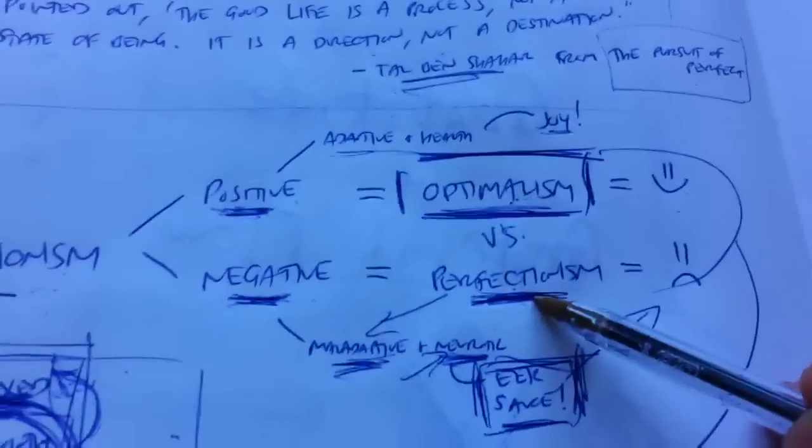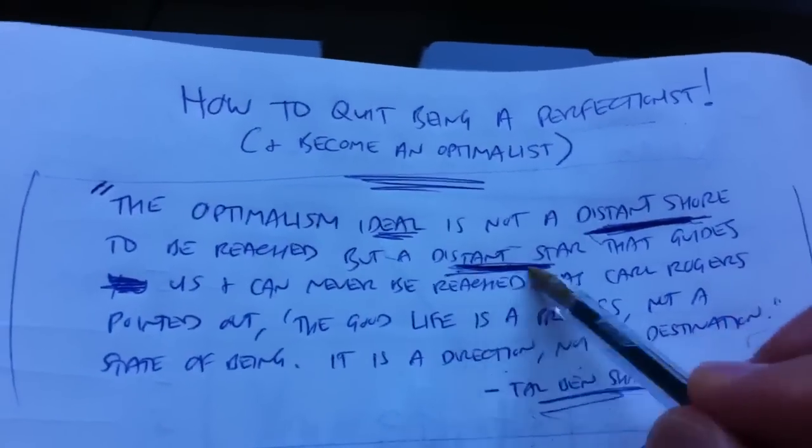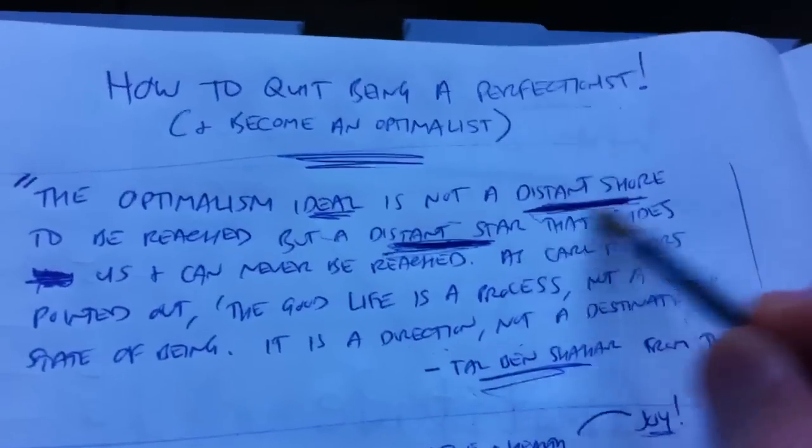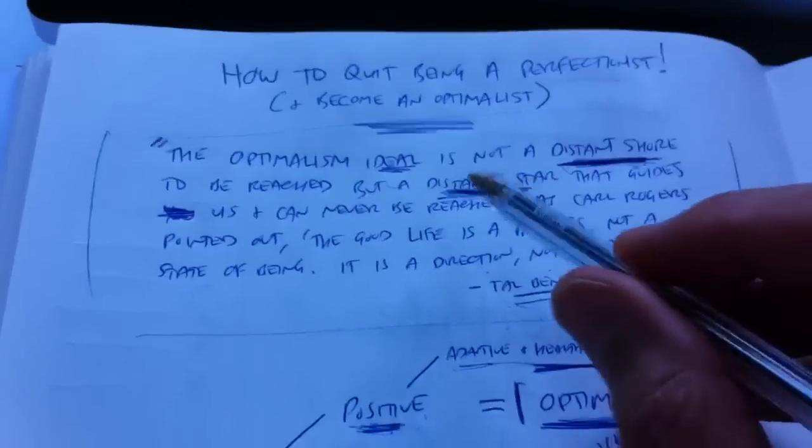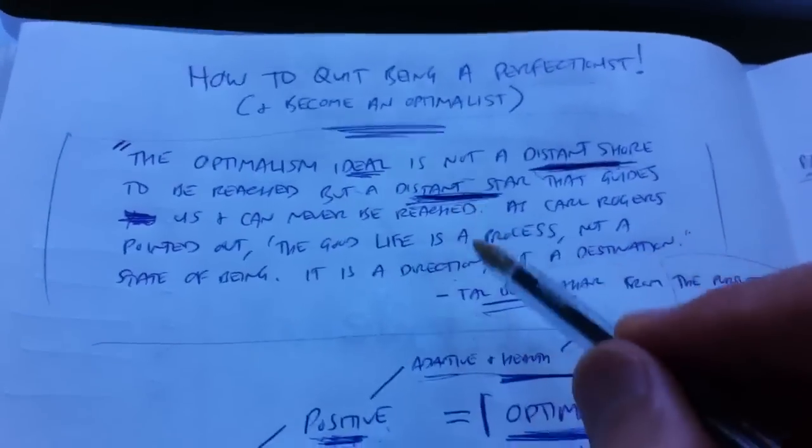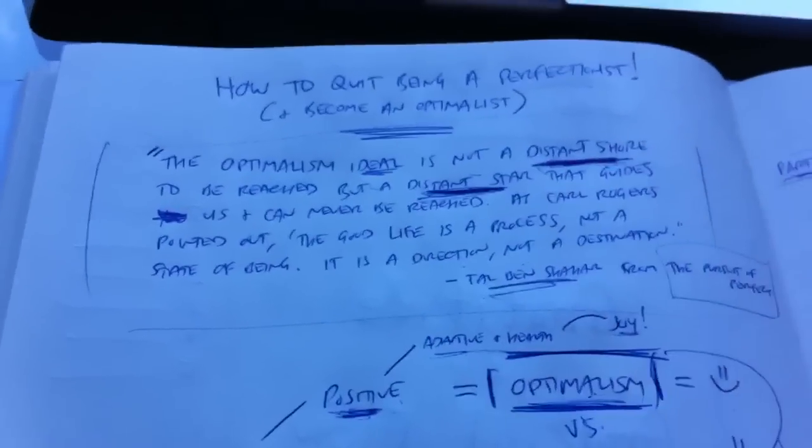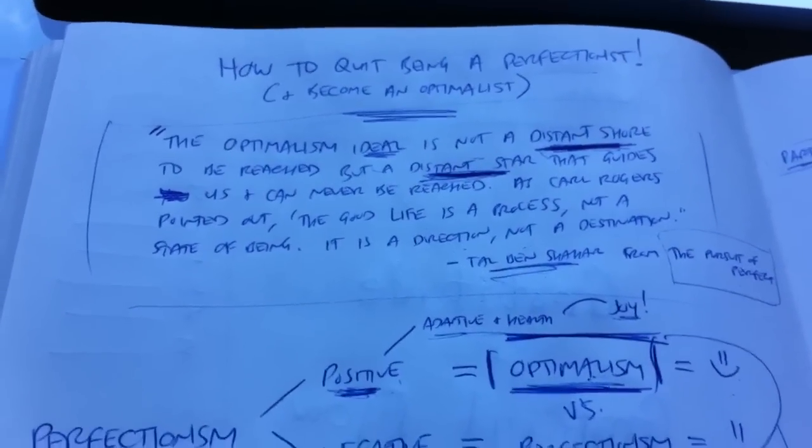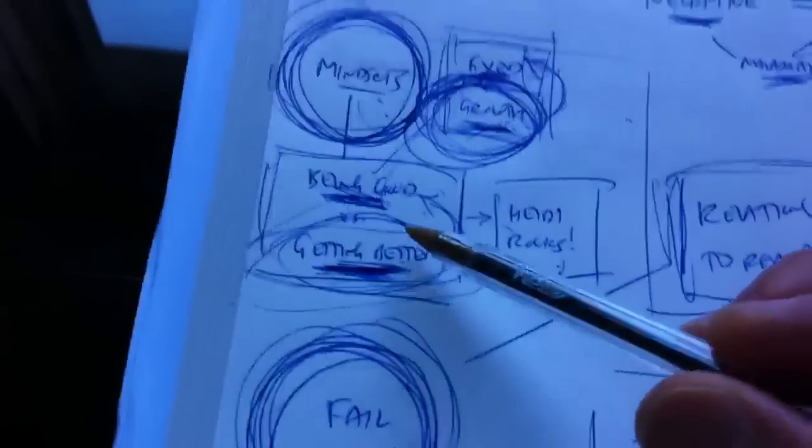So there you go, optimalism versus perfectionism. We want to look at our ideals as distant stars, not distant shores. You're never going to get there. But if you use your ideals as a distant star, as a compass, if you will, there's always an opportunity to get back on track and give it your next best shot as someone who's in the getting better growth mindset. So there you go.